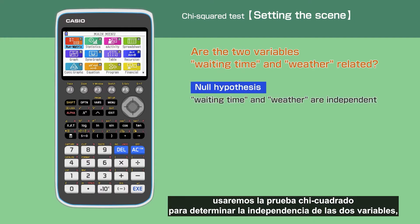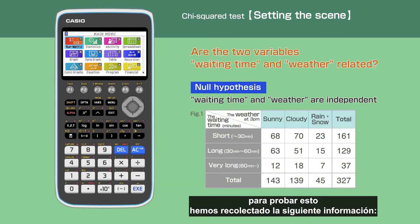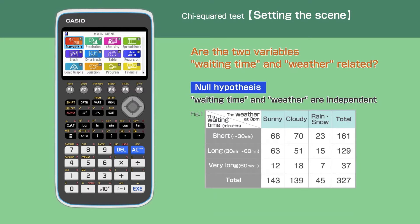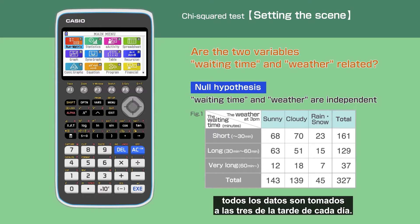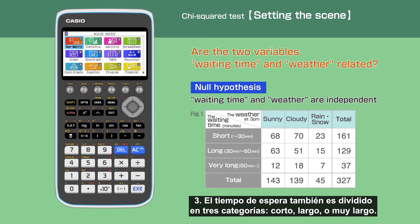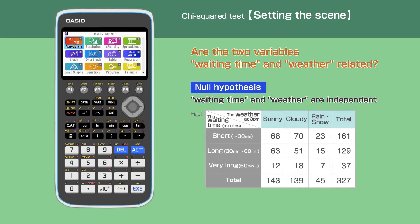In this video we are going to test if the two variables — waiting time and weather — are related. We will use the chi-squared test to determine the independence of the two variables. The data is taken between 1st January and 31st December 2019, all taken at 3 pm each day. The weather is divided into three categories: sunny, cloudy, or rain/snow. The waiting time is also divided into three categories: short, long, or very long.